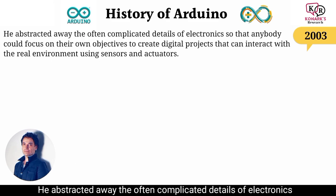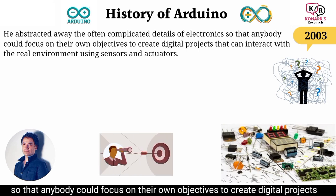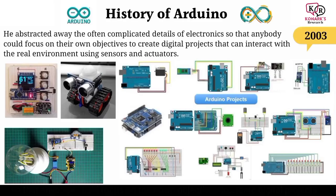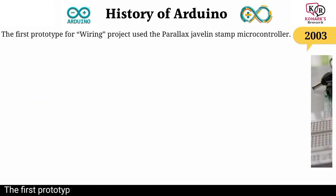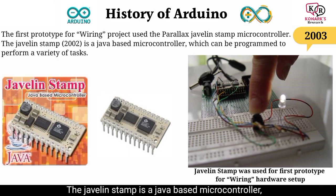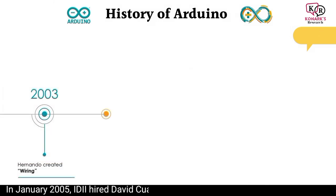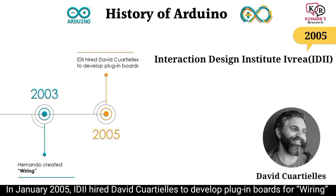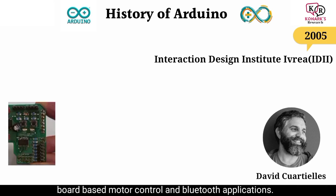He abstracted away the often complicated details of electronics so that anybody could focus on their own objectives to create digital projects that can interact with the real environment using sensors and actuators. The first prototype for the Wiring project used the Parallax Javelin Stamp microcontroller — a Java-based microcontroller which can be programmed to perform a variety of tasks.